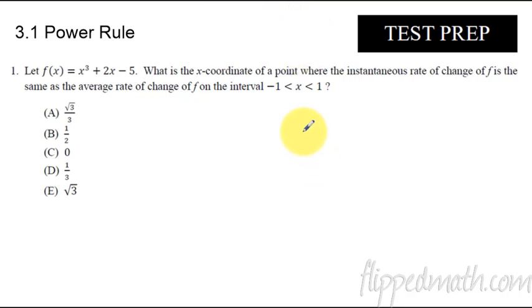So here's how this works. When you read this sentence here, what jumps out at me is what is the x-coordinate of a point where the instantaneous rate of change of f? That right here, instantaneous rate of change of f, that is exactly the same thing as just saying f prime. That is the derivative of f. So when is that the same as, or in other words, equal to, and then we have this part, the average rate of change of f.